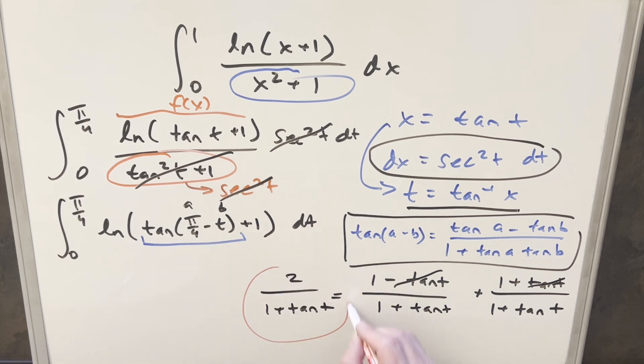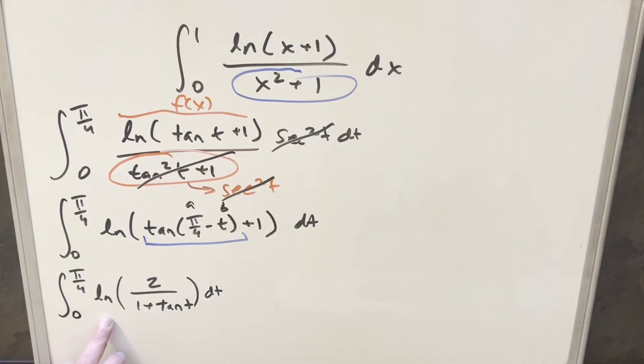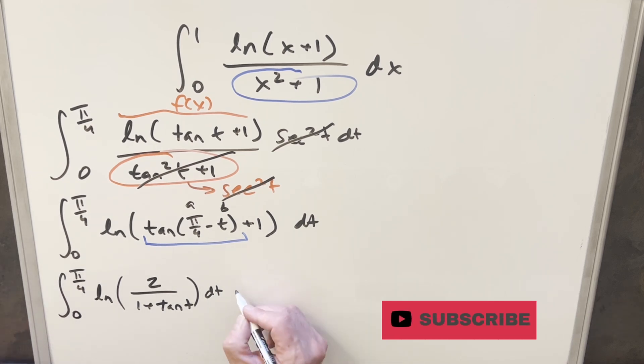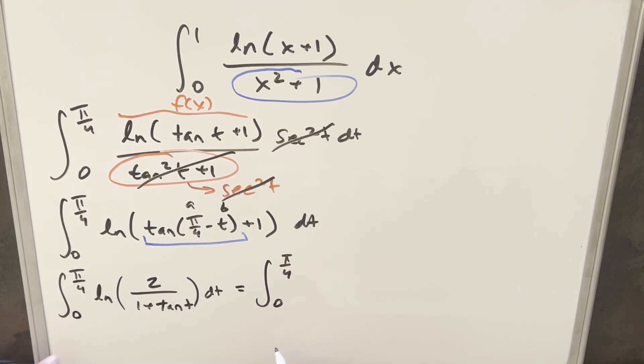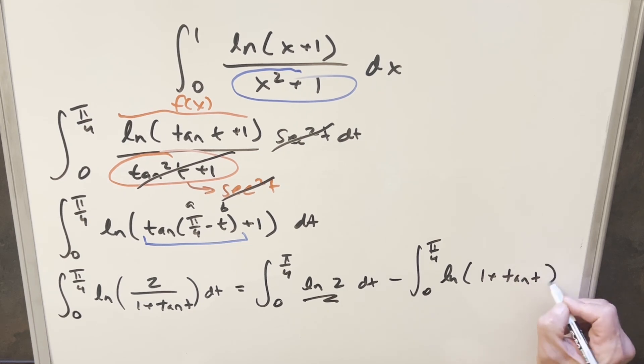Let's take this value and put it back in the integral. Now from here, we can use log properties. We can split up the natural log, but we also can split this up into two integrals. For the first one, we're just going to have zero to pi over four, and we're just going to have the natural log of two here. So that's just going to be a constant value.